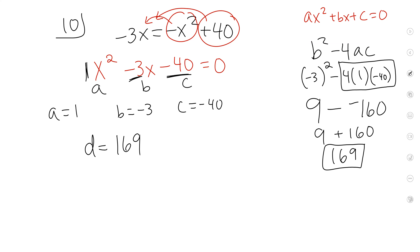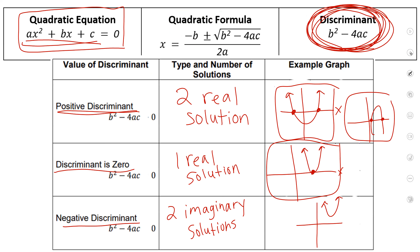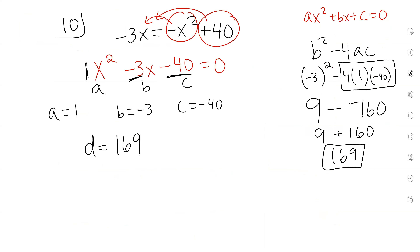Let's go back to our notes. If I have a positive discriminant, such as 169, that means I have two real solutions — so that's what you're going to write. Our discriminant was a positive number, so that means we have two real solutions. Is there another problem on your page you'd like me to do? Number 6? Okay, let's do number 6.